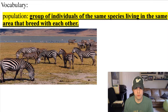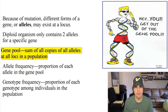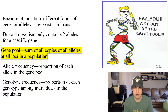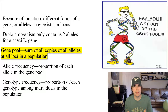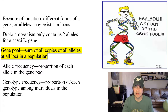Because of mutations, which are changes in DNA, different forms of a gene or alleles may exist. Diploid organisms — which means two copies, one from mom and one from dad — contain two alleles for each specific gene. All these alleles combined in a certain population are put inside something called a gene pool, which is the sum of all copies of all alleles at all loci on the genome in a population.